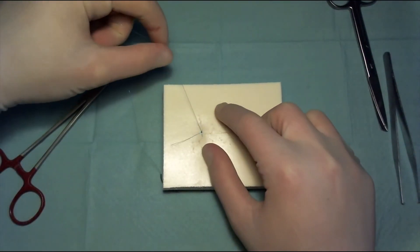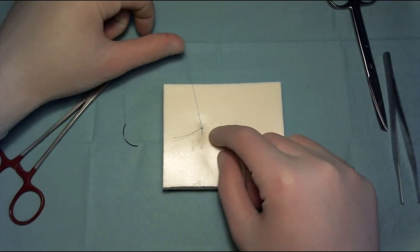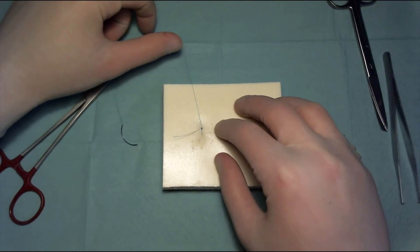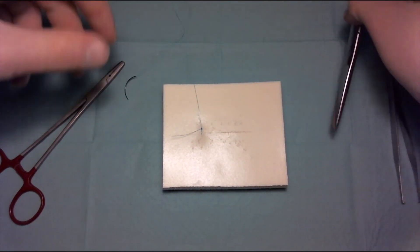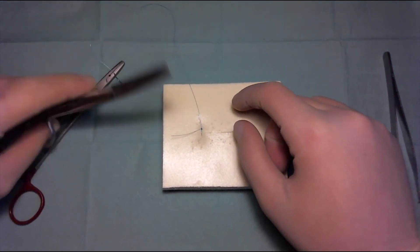And now we just have to pull it to one side, so that the knot is not inside of the wound. Because if the knot is over the wound, then the knot can get into the scar tissue, and it's harder to remove the knot afterwards.